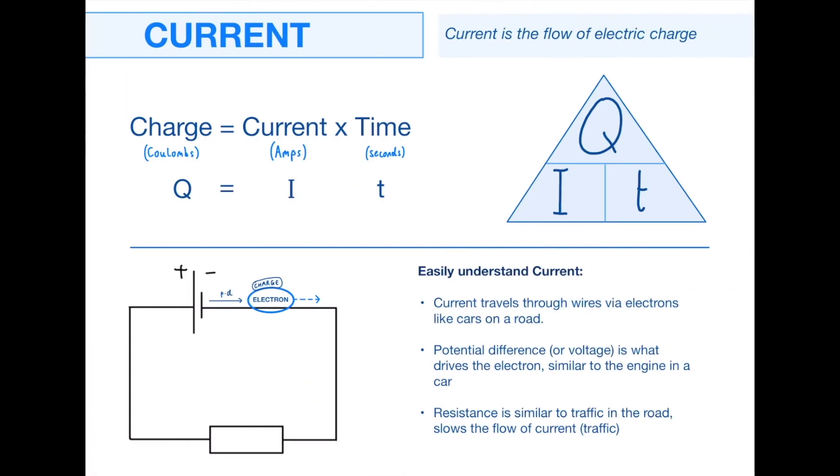Next, we have current. Current, by definition, is the flow of electric charge. There's an equation associated with this: charge equals current times time, Q equals IT for those of you that prefer to remember it in letter form. The units, which are really important: coulombs for charge, amps or amperes for current, and time is always in seconds.